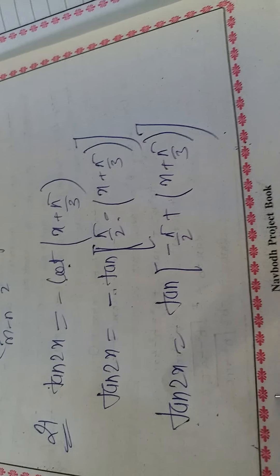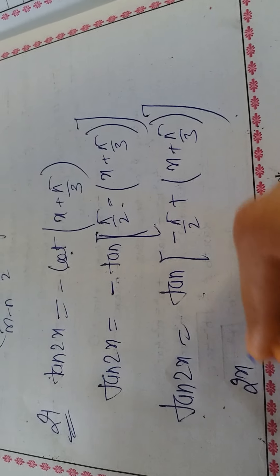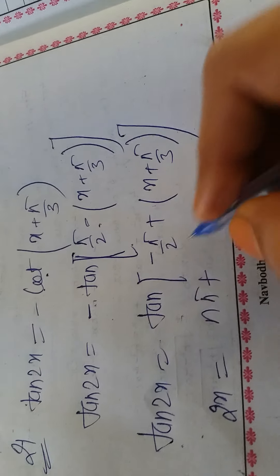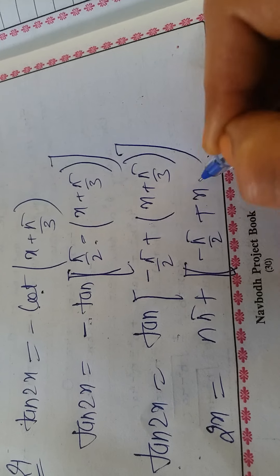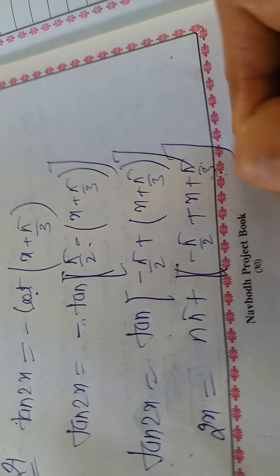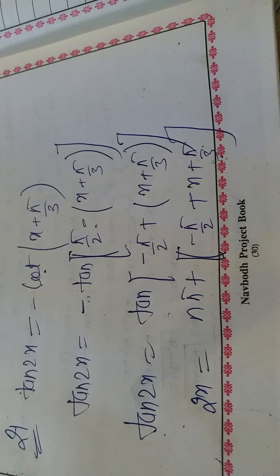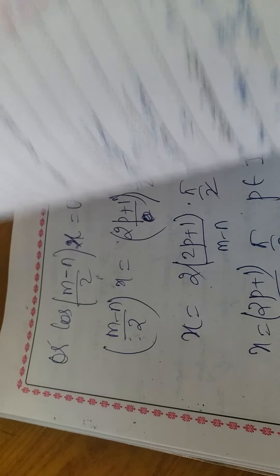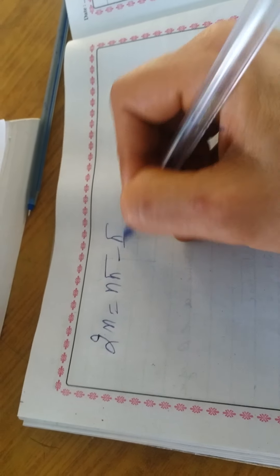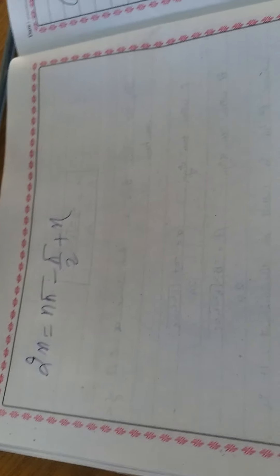Applying tan(θ) = tan(α) ⟹ θ = nπ + α: 2x = nπ + (-π/2 + x + π/3). Opening the bracket: 2x = nπ - π/2 + x + π/3.